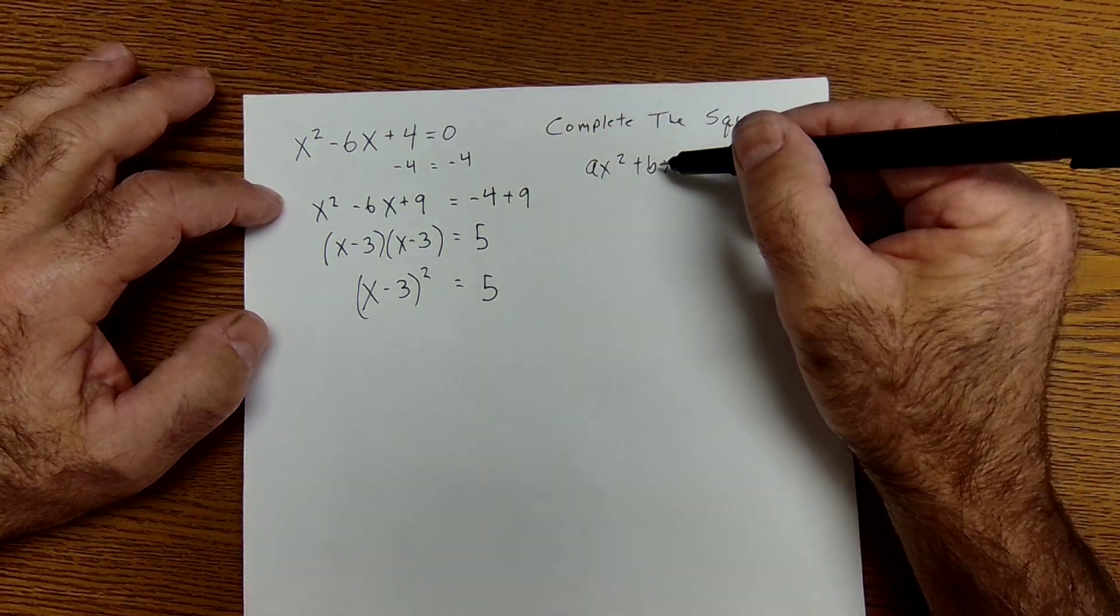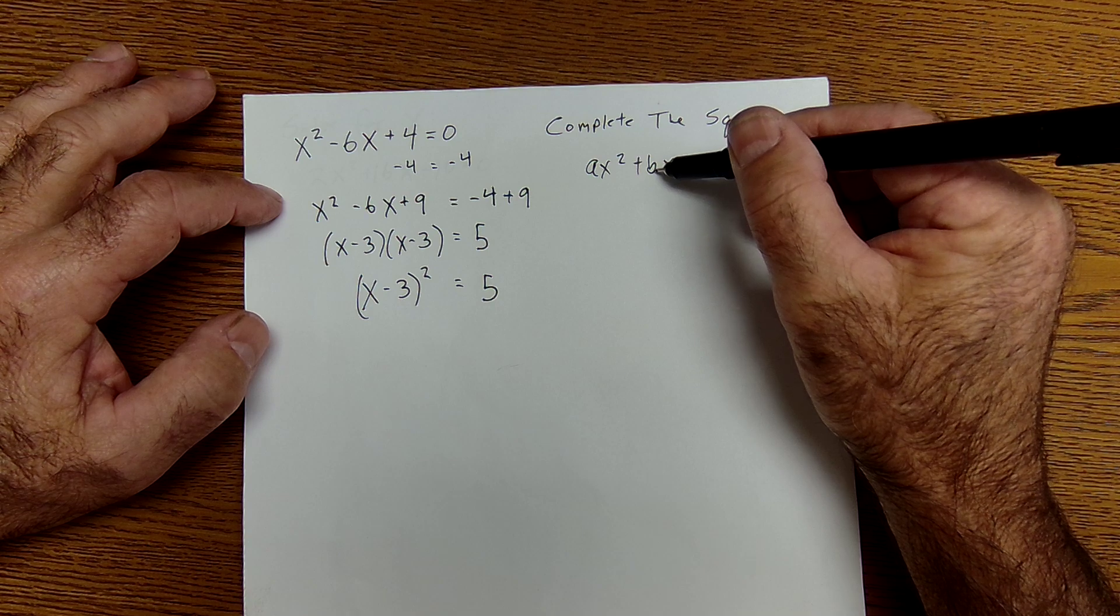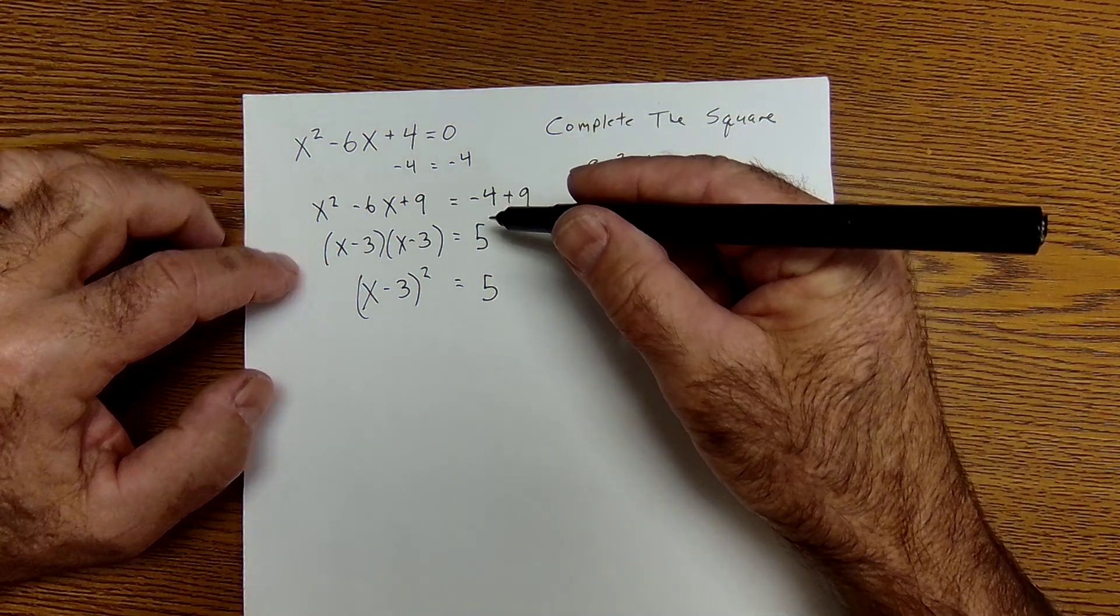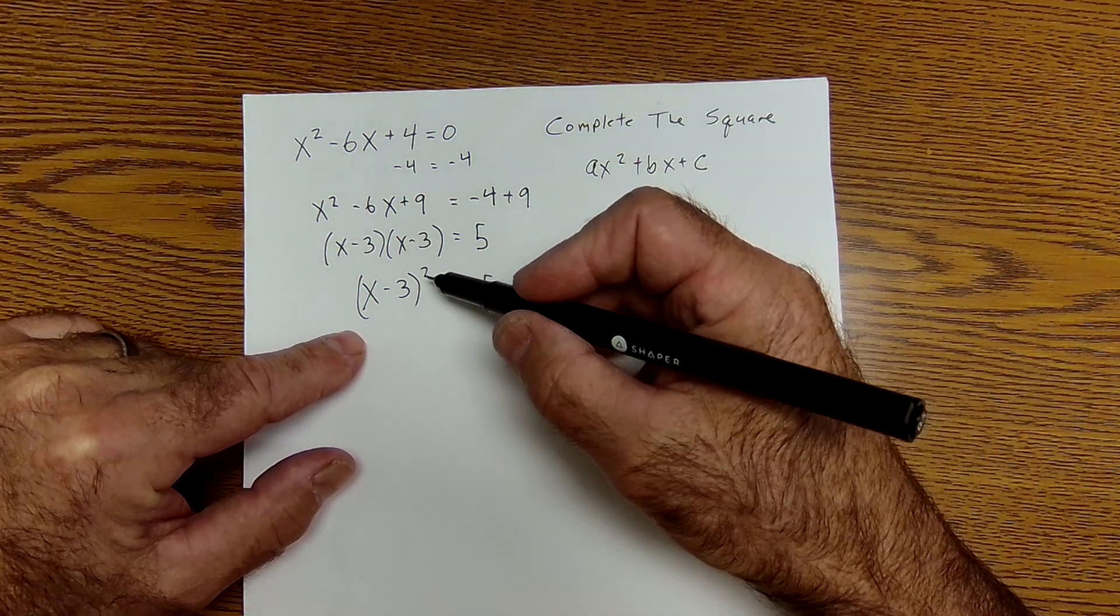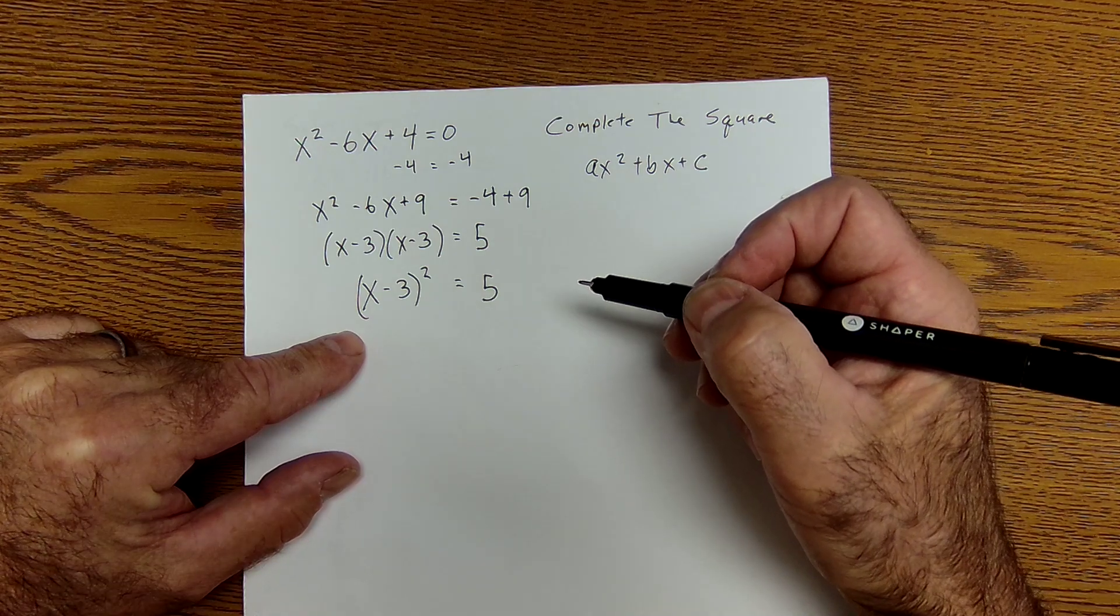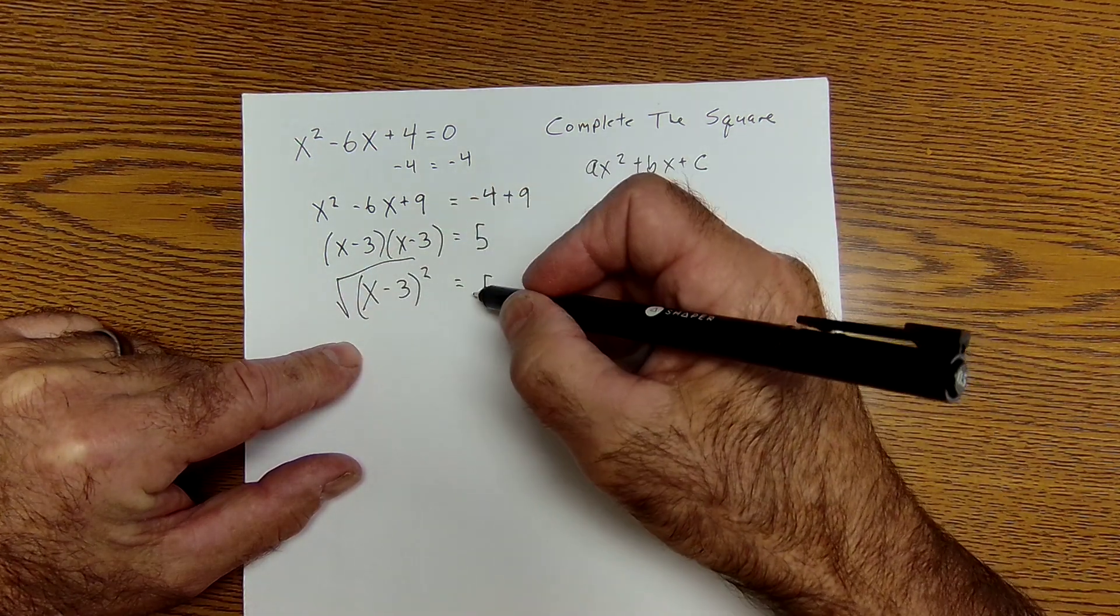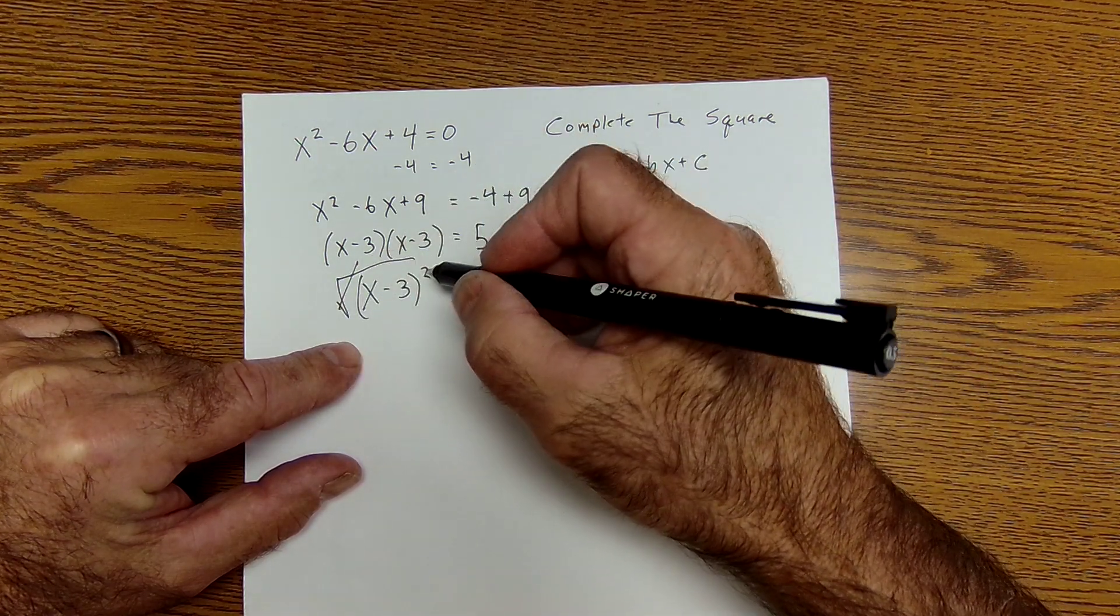by using this technique of taking half that value, squaring it, and adding it to both sides, I can solve it by reversing the square. Take the square root of both sides. Square root and square cancel.